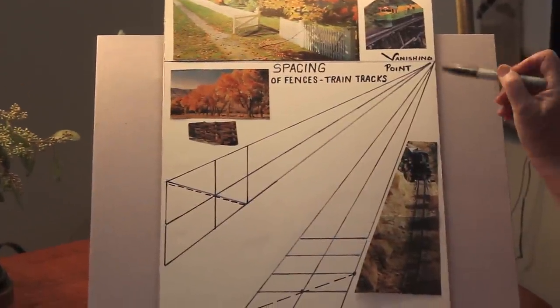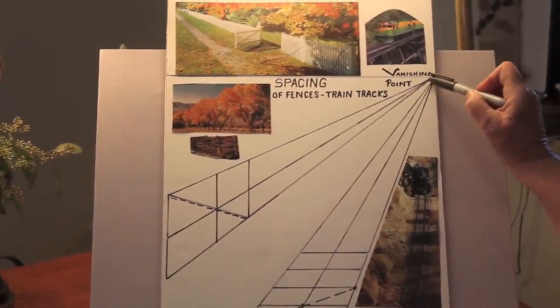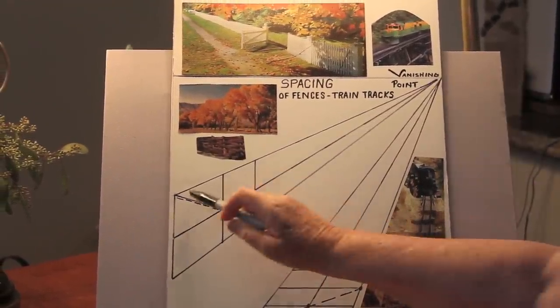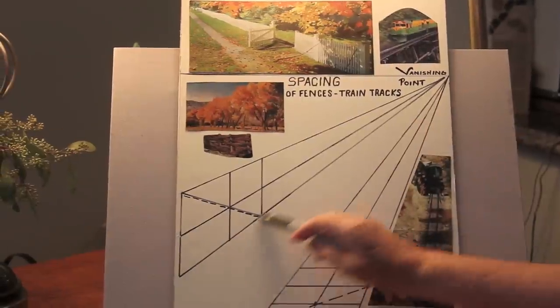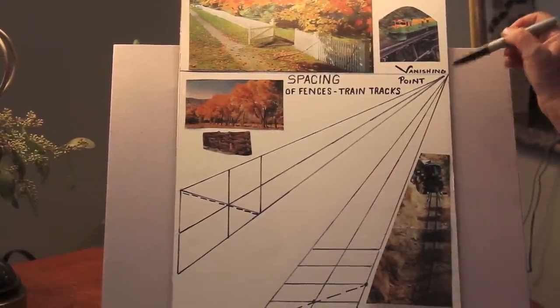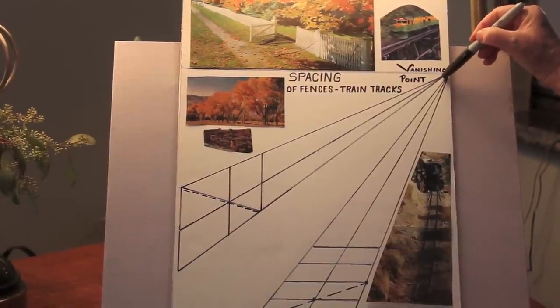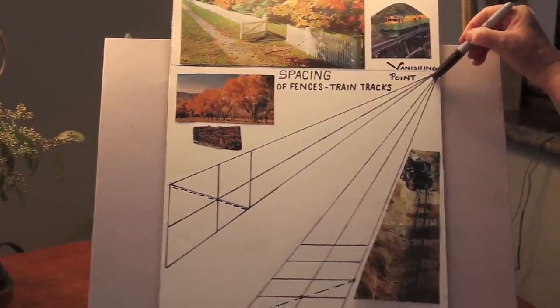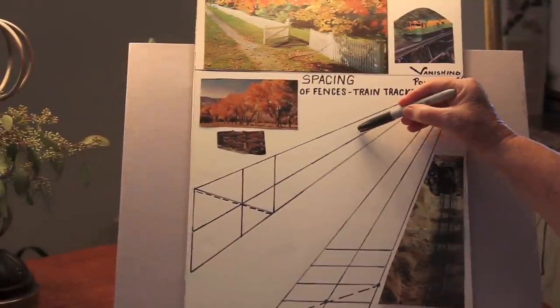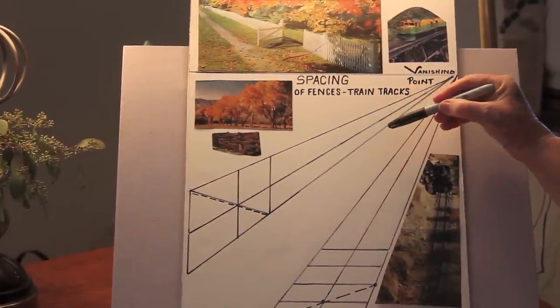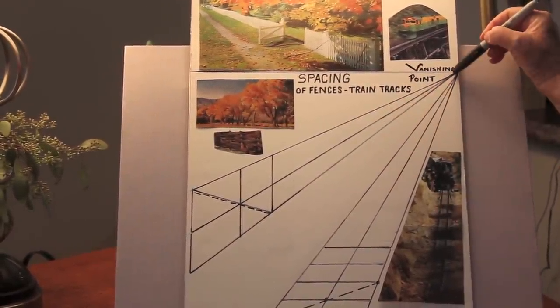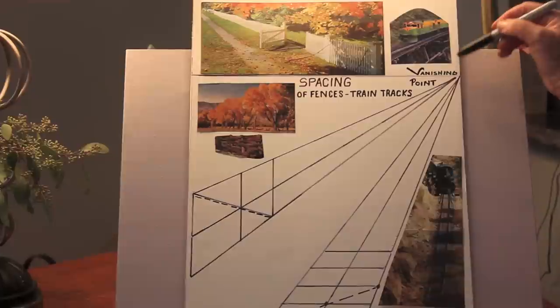Then the next thing you need is to draw a line from the vanishing point where your road is going to go or where you want the fence to end up. And that line has to be exact. Your lines have to go from exactly the same point. If they don't, you'll have a wider top and a narrower bottom and you'll wonder what happened. Make sure that this point is exact.